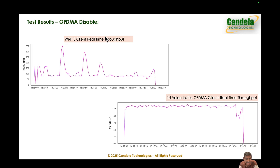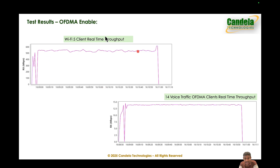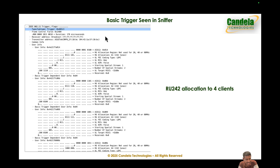The same test repeated with OFDMA enabled shows about 500 Mbps throughput for the Wi-Fi 5 client. The 14 Mbps throughput for the OFDMA capable clients stays the same — traffic to OFDMA clients continues normally without disruption while the Wi-Fi 5 client achieves a significantly higher throughput. This clearly shows the OFDMA traffic is consuming much less air time, so more air time is available for the Wi-Fi 5 client. We also confirmed that OFDMA is actually happening by looking at counters from the AP and using a sniffer to capture basic trigger frames — showing RU242 being assigned to four different clients.